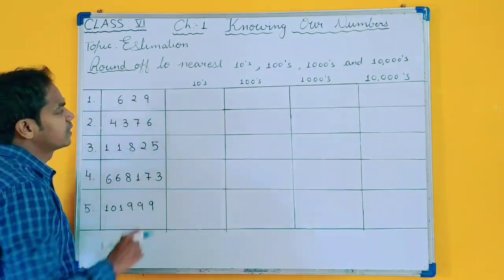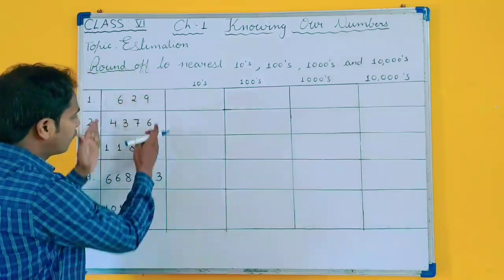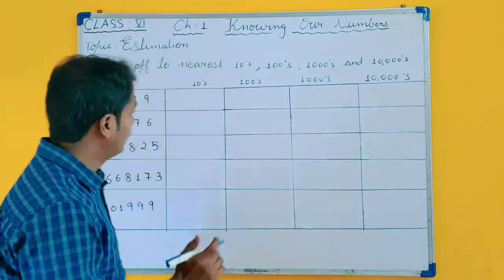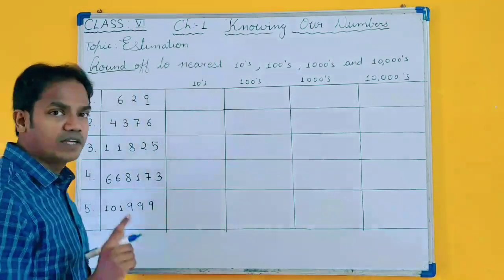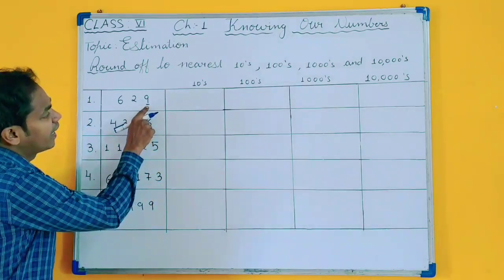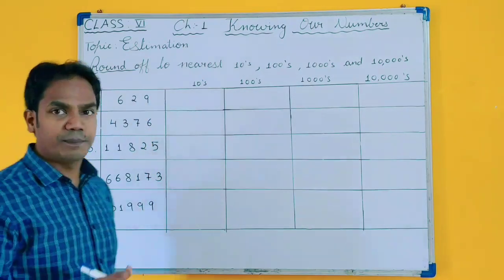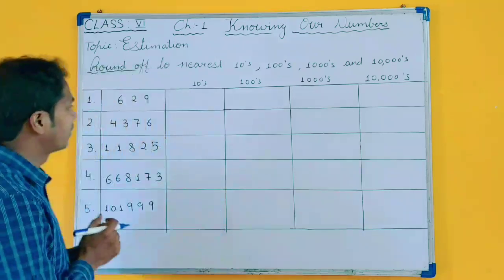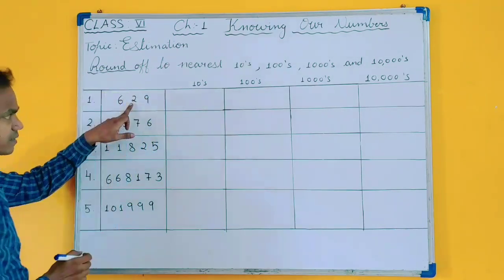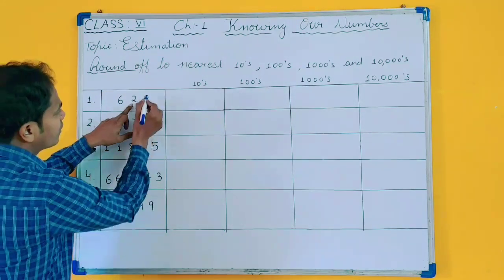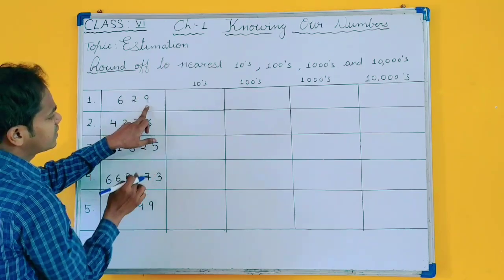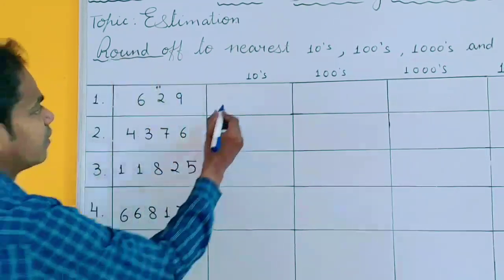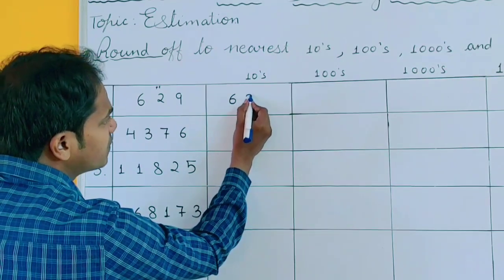Your first number is 629. First we will convert this number into tens. Before rounding off to ten, you will check only the unit place. If your unit place is 5 or more than 5, you will do plus 1 to the tens place. Here the unit place is 9, which is more than 5, so I will do plus 1. Your rounding off to ten will become 630.